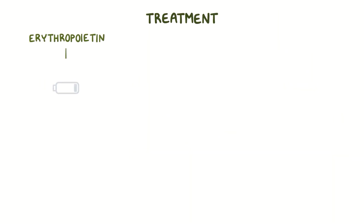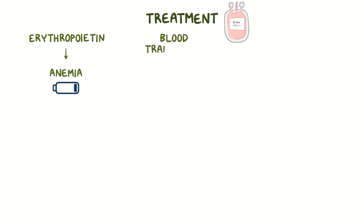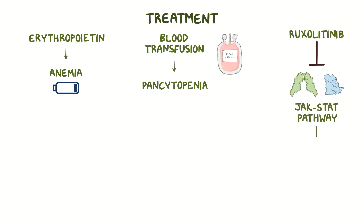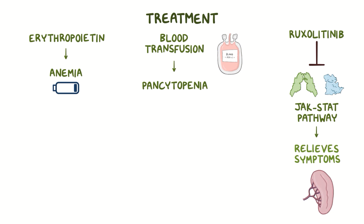Erythropoietin can be given for anemia, and blood transfusion can be given for pancytopenia. The medication ruxolitinib can help inhibit the JAK-STAT pathway, and it relieves symptoms and specifically causes a reduction in spleen size.